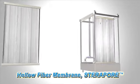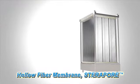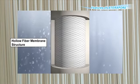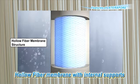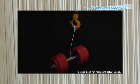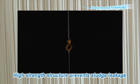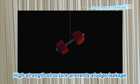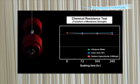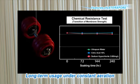Our PVDF hollow fiber membrane, SteriPore, has a design that allows simple operation, achieving a more space and energy efficient MBR system. Mitsubishi Rayon's hollow fiber membrane has adopted a structure with internal supports. Because this structure provides high strength, it can prevent sludge from flowing out to the treated water when unexpected damage or deterioration occurs. In addition to its high strength, it also has excellent chemical resistance, which allows long-term use under constant aeration.